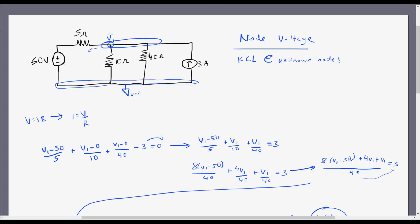Now if I wanted to find what the current leaving these branches was for the 5 ohm and the 10 ohm and the 40 ohm, all I would simply have to do is take I equals V over R. So for this situation, I would get I is equal to 40 minus 50 over 5 or negative 10 over 5 or negative 2 amps. Pretty simple, huh?